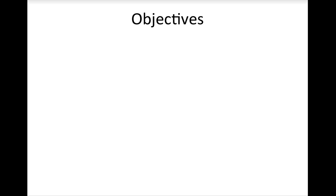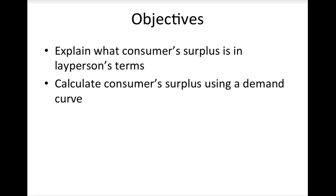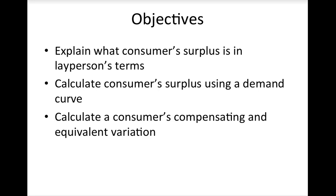By the end of this lesson I hope that you are able to do four things. First, you should be able to explain what consumer surplus is in simple terms. Second, if you have a graph or equation for a demand curve, you should be able to calculate consumer surplus using that information. Third, you should be able to calculate two alternative measures of consumer surplus called the compensating variation and the equivalent variation. Finally, you should be able to calculate producer surplus for a market transaction.